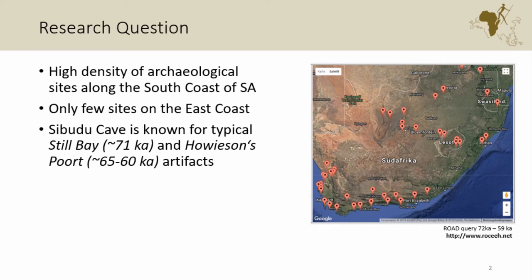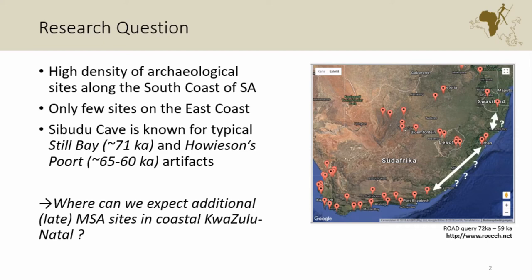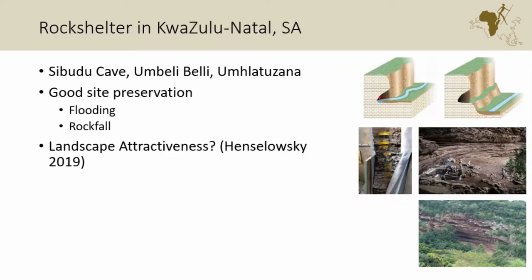All these sites were occupied during the two seasons of Stilbay and Howieson's Poort, 70,000 to 60,000 years ago. We wanted to map where we might find additional sites. The three known sites are all rock shelters, which means they have very good preservation — you can see a very fine stratigraphy spanning thousands of years.